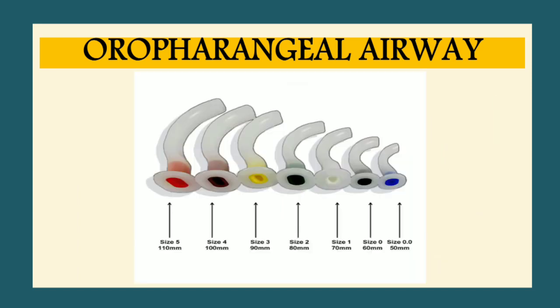These are the various sizes of oropharyngeal airway with their color codings. The most commonly used color codings for adults are yellow and green, which correspond to size 2 and size 3.